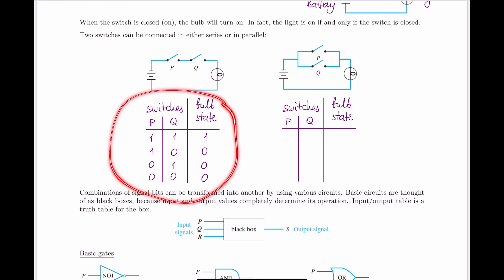Think about what logical operation this truth table reminds you of — where the only time we have a true value is when we have true AND true. It shouldn't be a big surprise that this is in fact the AND operation, our conjunction.